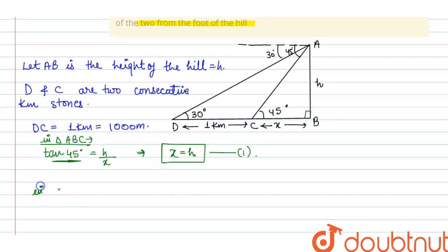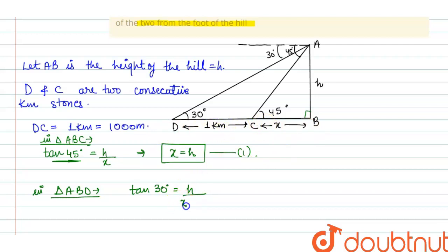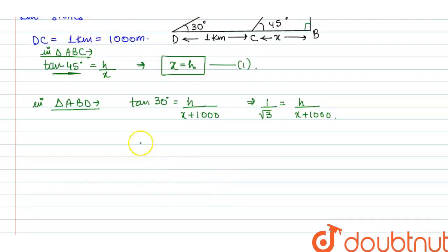Now in triangle ABD, tan 30 degrees equals AB over BD, which means h over (x plus 1000). The value of tan 30 degrees is 1 over root 3. So 1 upon root 3 equals h upon (x plus 1000). Cross-multiplying, I get h times root 3 equals x plus 1000. Let this be our second equation.